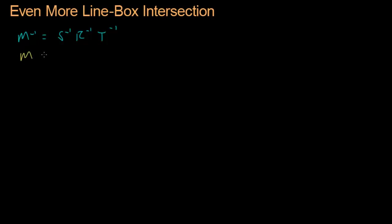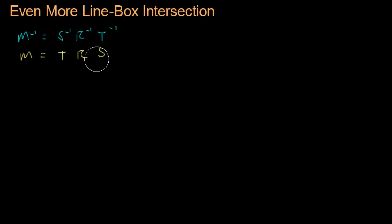When we had M, it was a product of T, R, and S. But now we have M inverse, and it's a product of S inverse, R inverse, and T inverse — all inverses. I want to point this out because order matters, and we have reversed the order when getting the inverse. So let's embark on our mission to find all these inverse matrices.